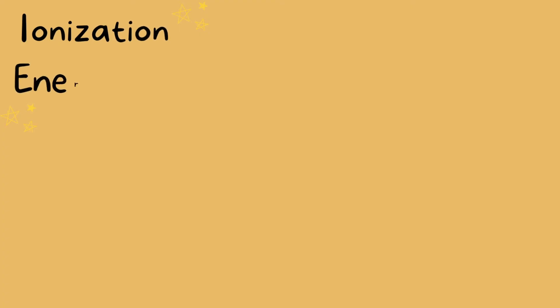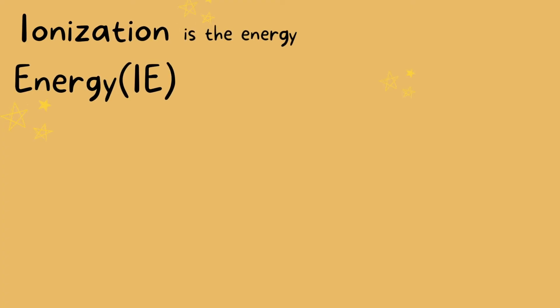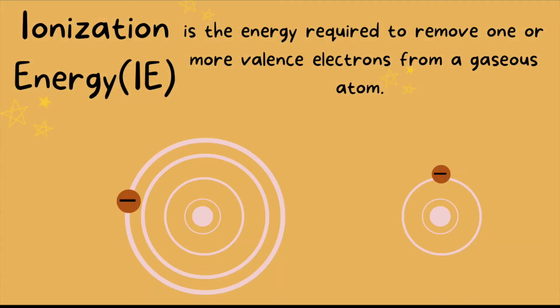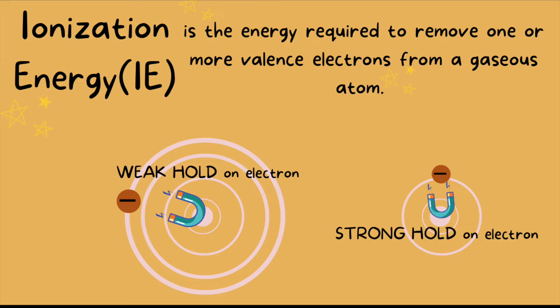Moving on to our next trend: ionization energy. Ionization energy is the energy required to remove one or more electrons from the valence shell of a gaseous atom. Here we have two atoms — one atom has its electron relatively far from the nucleus and the other has its electron relatively close to the nucleus. There will be a weak hold on the one with greater distance and a strong hold on the one with the electron closer to the proton.